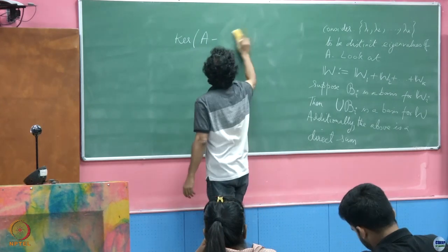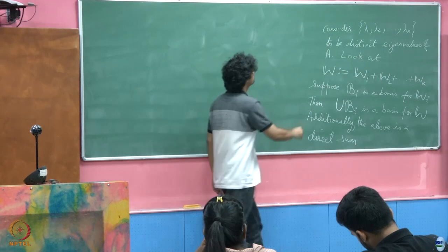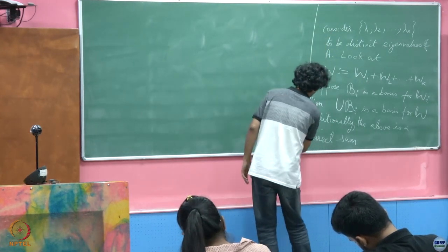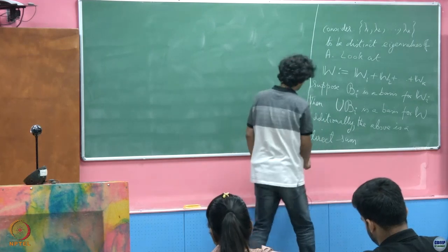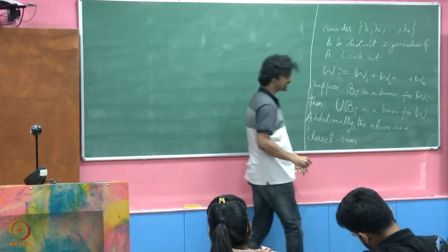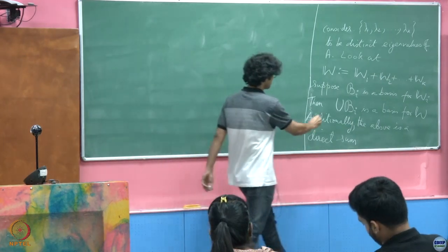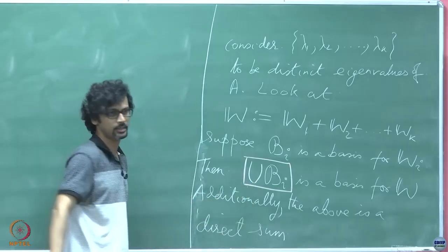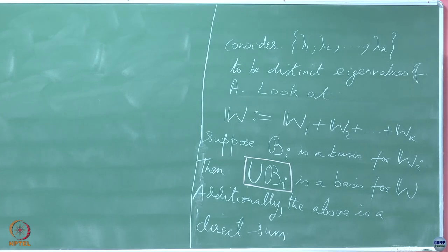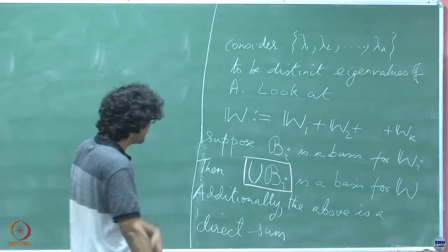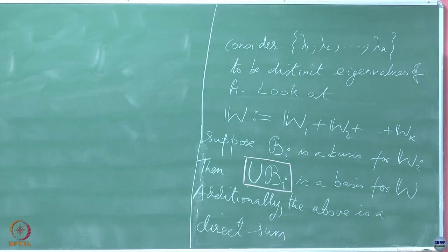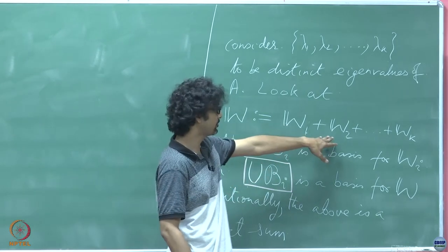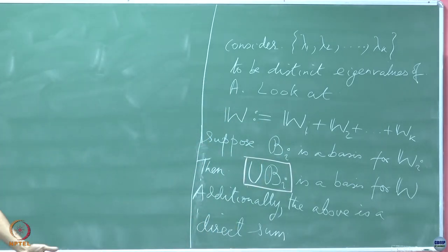To prove this, it will of course involve showing two things. The first part — prior to showing this is a direct sum — will involve showing two things: first, that this union set is a linearly independent set, and second, that it is a generating set for W. If I show that, I will be done with the first part. The spanning part should be pretty obvious, actually — the part about this being a generating set is not very hard to see.